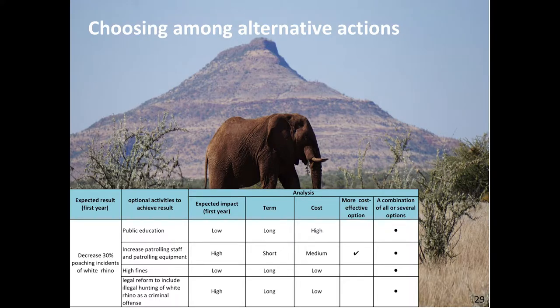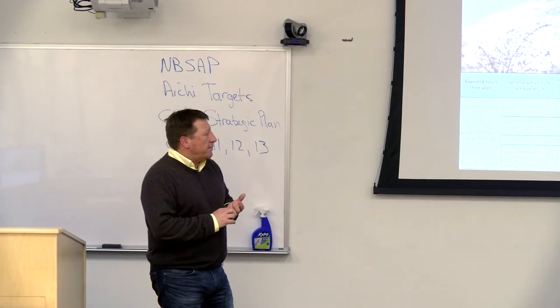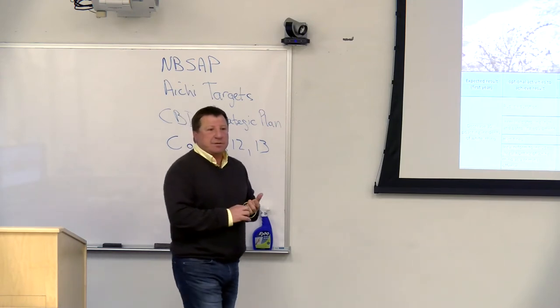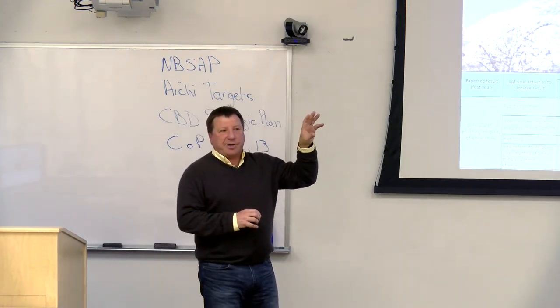When they go through the prioritization process, they look at various ways to address each priority. South Africa's example: a 30% decrease in poaching incidents of white rhinos — a very specific outcome. Four different approaches evaluated on their short-term impact, recognizing politicians have short-term time horizons, as well as their long-term viability and cost. We then choose the most cost-effective process or project, because we typically only have the cost side of the equation, not the benefit side.